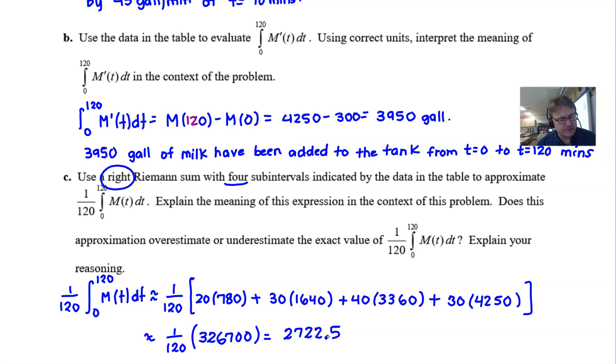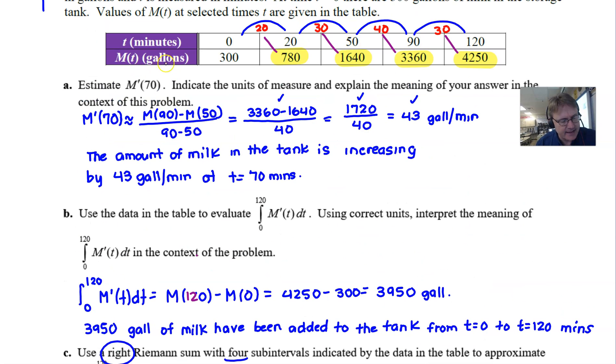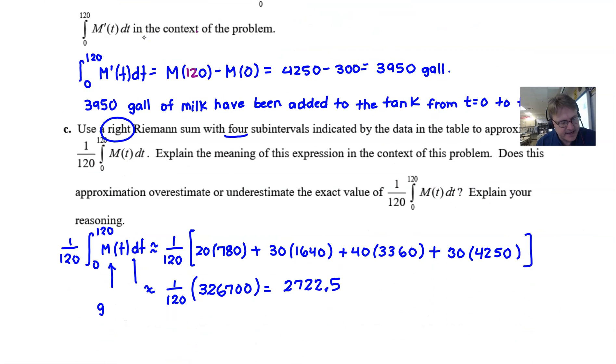Now we have to think about what is our units and that's really interesting here because we've got something here that's measured in M dt. Now if you remember, M is gallons, right, M stands for gallons of milk. T of course is time in minutes. So we have gallons times minutes, but by the time we divide this by 120, which is actually minutes in the denominator, the minutes will cancel and we essentially have gallons again.